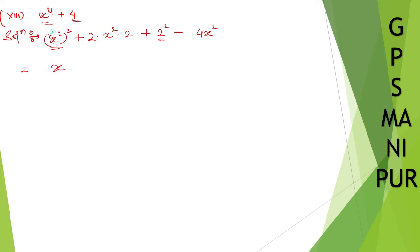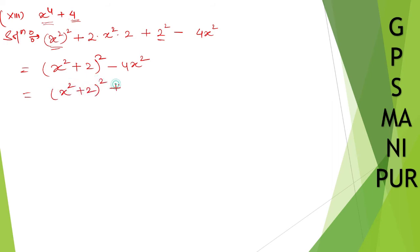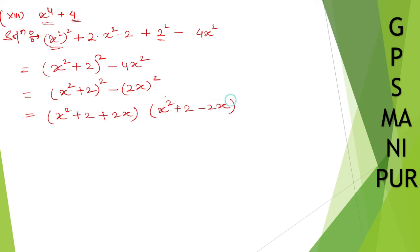If you take this whole as a, then a square plus twice a b plus b square, I can write down as a plus b whole square. So we have a plus b whole square minus 4x square. Now, 4x square I can write down as 2x whole square. So this is a square minus b square, which we can write as a plus b, multiplied by a minus b.